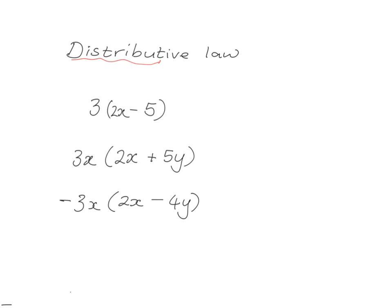To multiply out these brackets, we multiply the three with the 2x and also multiply the three with the minus five. Three times two is six, so we get 6x. Then three times negative five gives us negative fifteen. So 3(2x − 5) is equivalent to 6x − 15. These two expressions give you exactly the same answer no matter what value of x you put in.